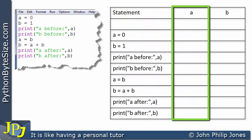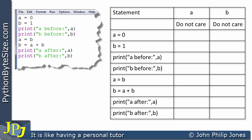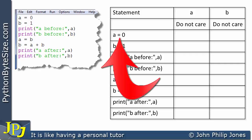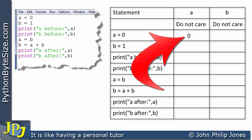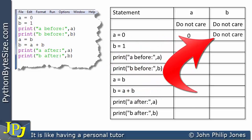In the trace table, one column shows the statements, one column shows the contents of variable A, and the third column shows the contents of variable B as the program flows. Before the program executes, both A and B are in a 'don't care' state — they don't exist yet. When the line A = 0 executes, A is assigned 0. This statement does nothing to B, so we copy the don't care state down.